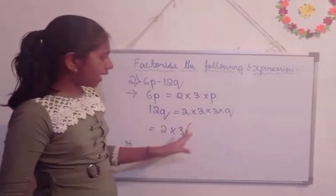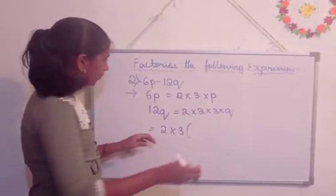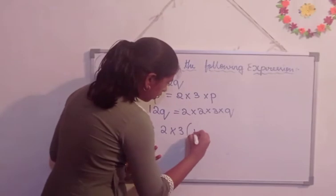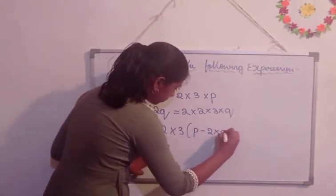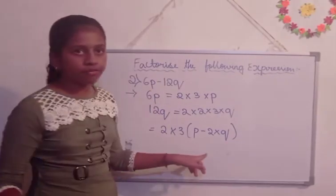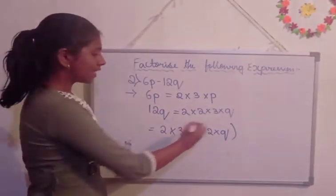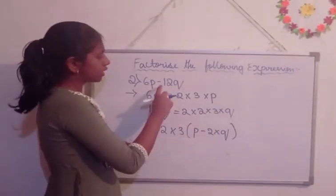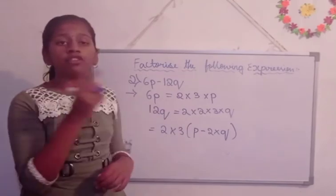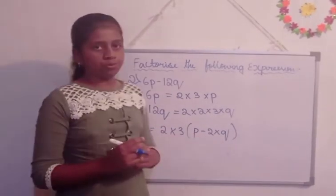There, p minus 2 into q. P minus 2 into q. These are left out because these are not the common factors. These are the factors. Here, p first we are written and minus 2. Why? Because here minus 12q is there, we are going to follow the mathematical operation sign. So, minus 2 into q.